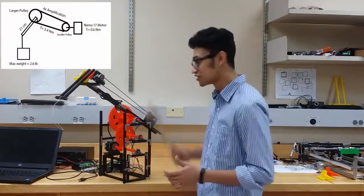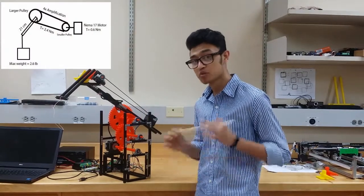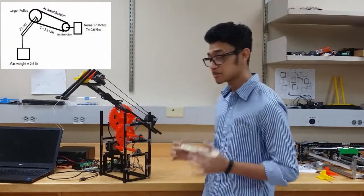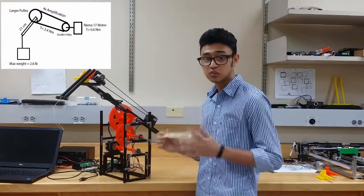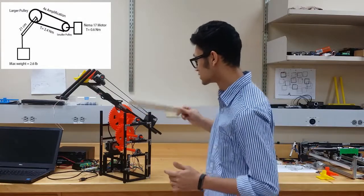Once we amplify the torque of this motor using the pulley system, we obtain a torque of approximately 2.4Nm. Since the arm is 0.21m long, according to our calculation, the maximum weight this robot will be able to lift is 2.6lbs.